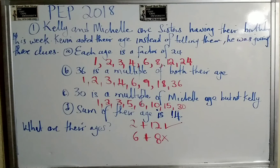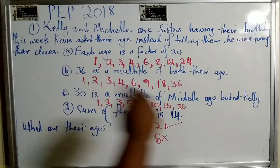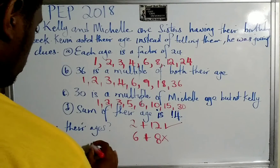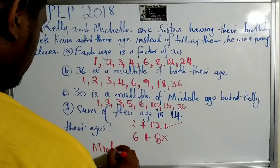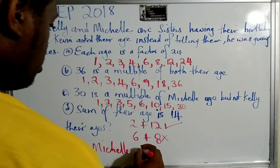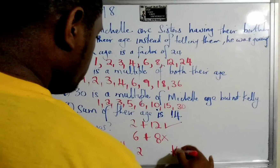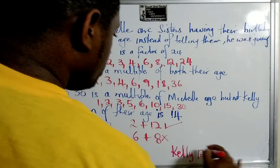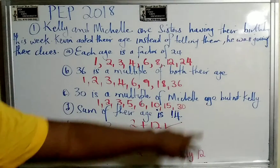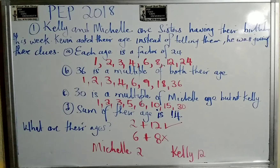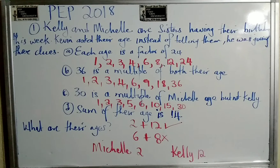Now let us differentiate which age belongs to Kelly and which to Michelle. The clue says 30 is a multiple of Michelle's age but not Kelly's. So Michelle's age would be 6, because 30 is a multiple of 6. And Kelly's age would be 12, because 30 is not a multiple of 12 — it leaves a remainder.